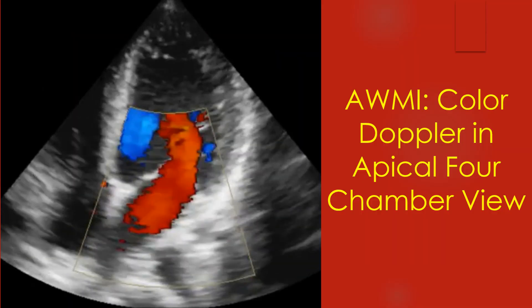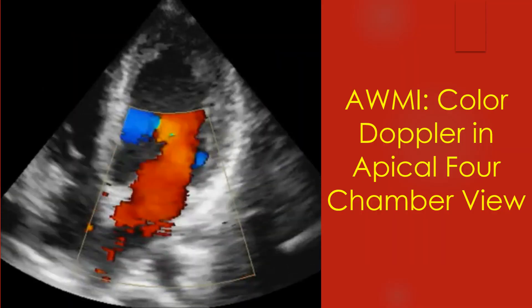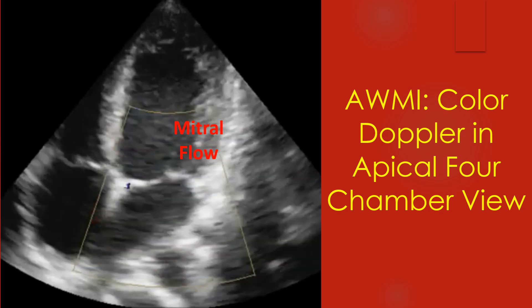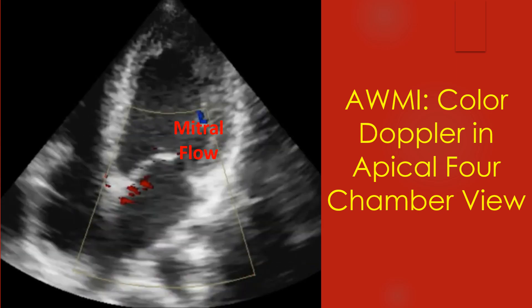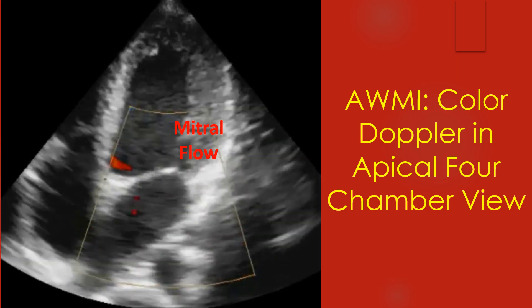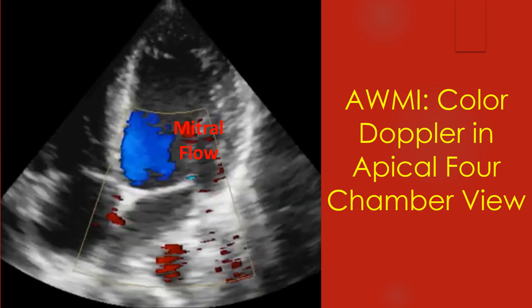Color Doppler imaging in apical four chamber view. The red flow is diastolic mitral flow towards the transducer, and the blue flow is away from the transducer towards the left ventricular outflow tract.